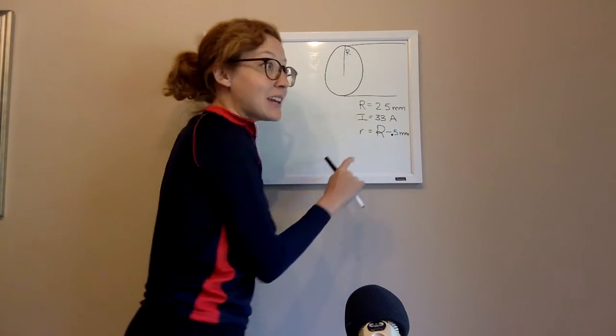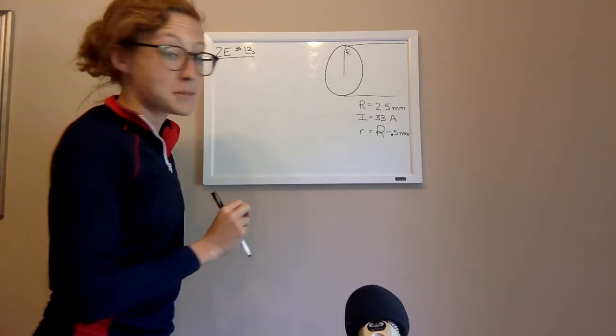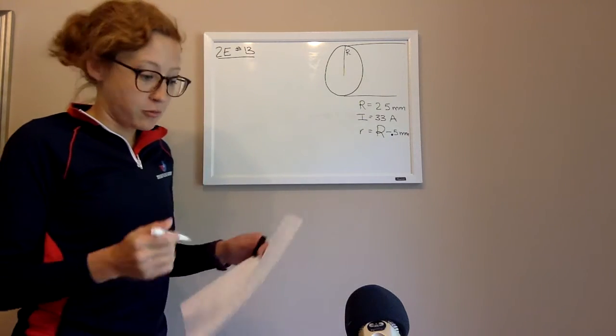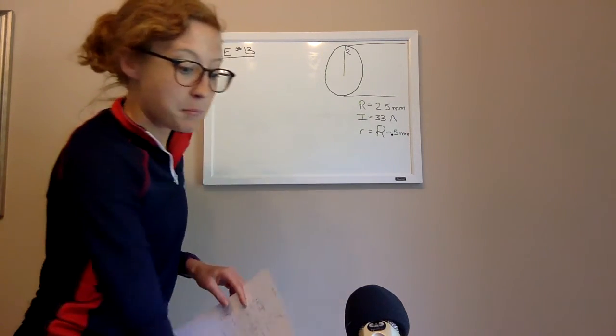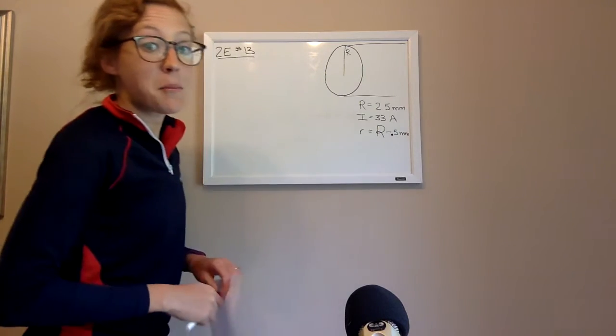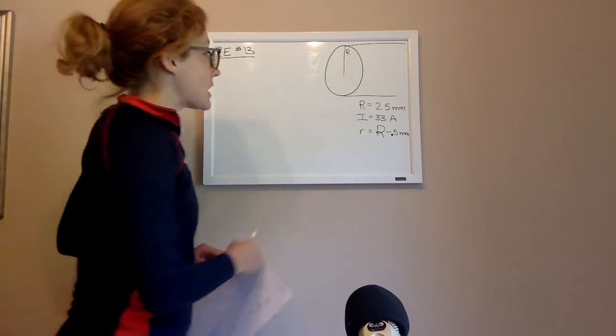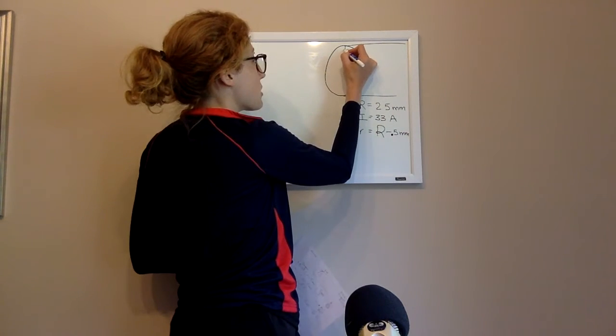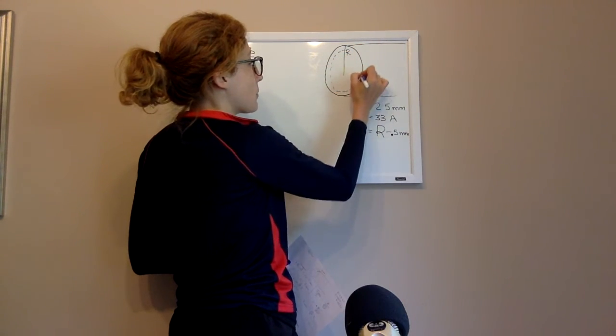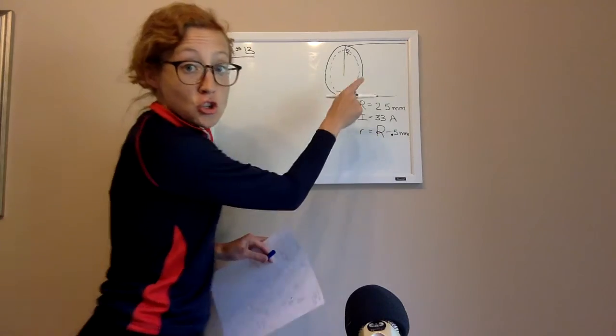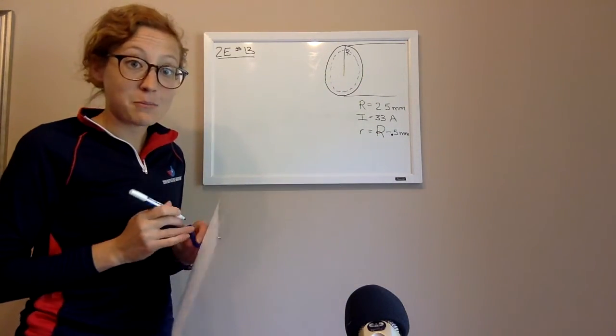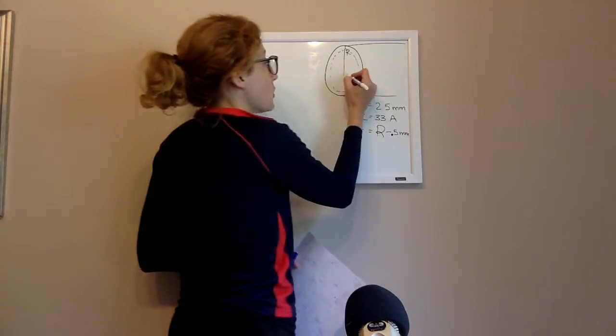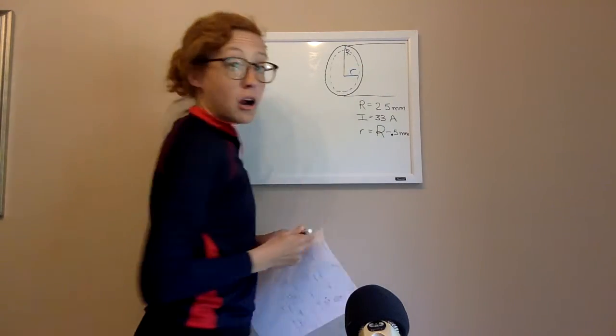They gave us that I, in this case, is 33 amps. What they were looking for here was the B field some half millimeter in from the outer edge of this wire. So in other words, they're wanting us to take a look at some sort of a circle within that radius. It's just in by half a centimeter. So we call this radius little r.